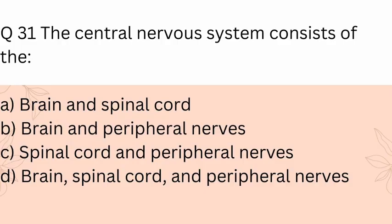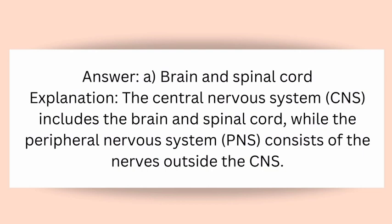Question 31: The central nervous system consists of the? A) Brain and spinal cord, B) Brain and peripheral nerves, C) Spinal cord and peripheral nerves, D) Brain, spinal cord, and peripheral nerves. Answer: A) Brain and spinal cord. Explanation: The central nervous system (CNS) includes the brain and spinal cord, while the peripheral nervous system (PNS) consists of the nerves outside the CNS.